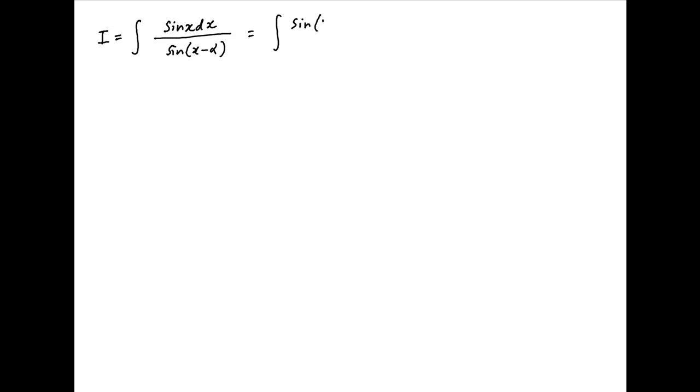Sine x in the numerator of the integrand can be written as sine of x minus alpha plus alpha. This can be expanded and therefore the value of I is equal to sine of x minus alpha times cos alpha plus cos of x minus alpha times sine alpha divided by sine of x minus alpha dx.